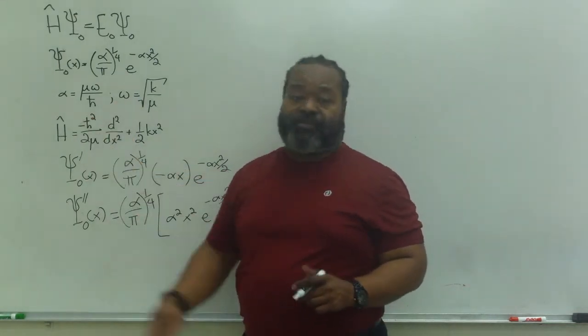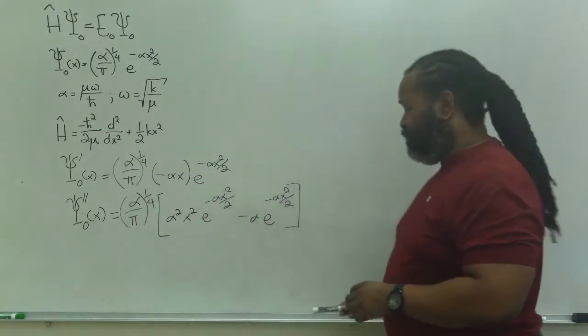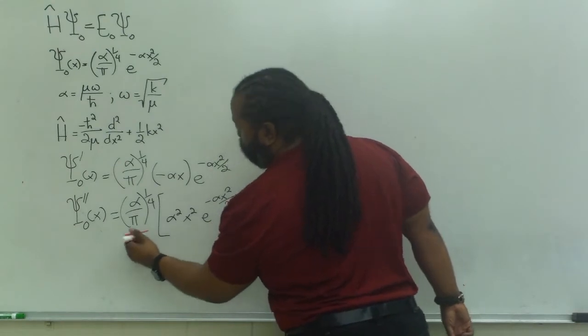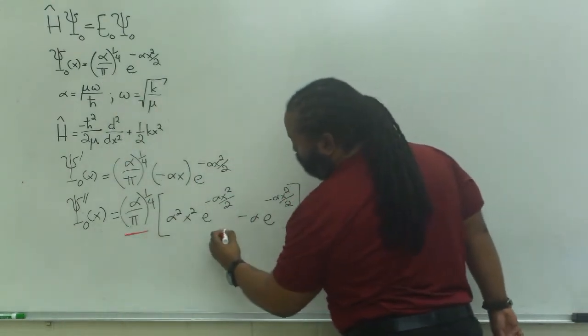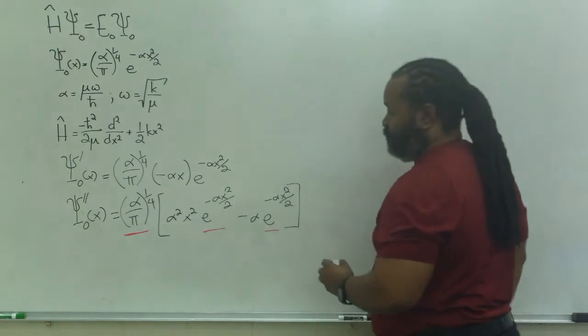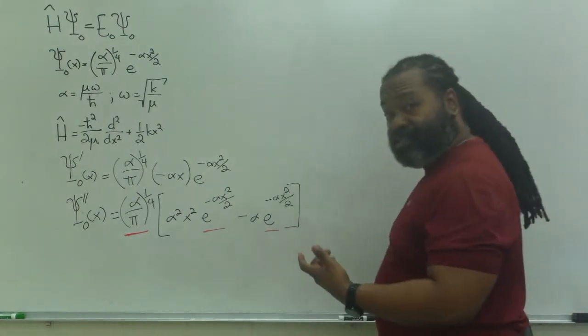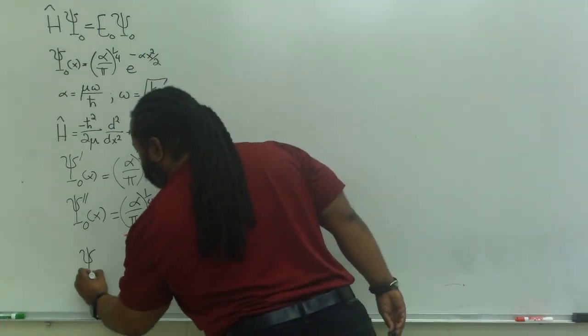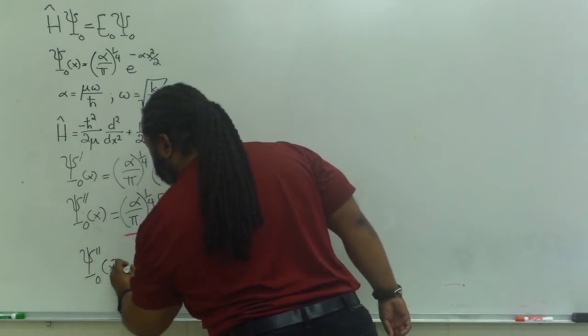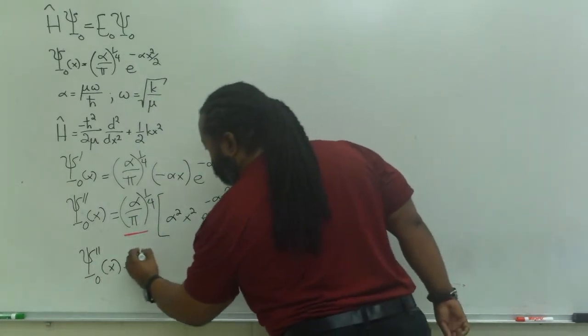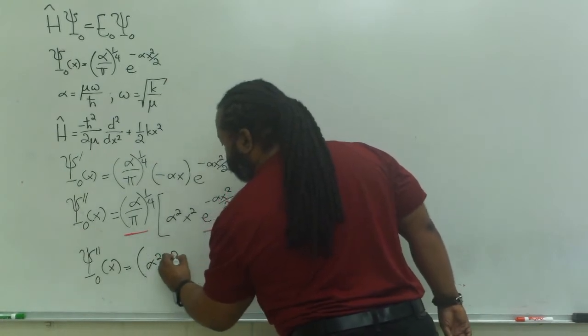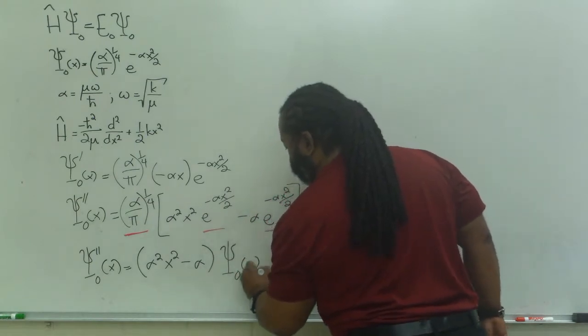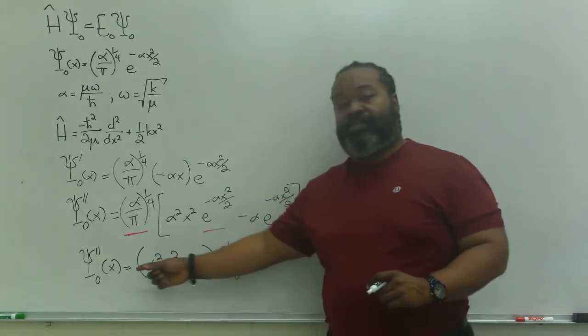But, the thing we want to make special care to recognize is that we have the normalization factor from the original wave function, and we can factor out the exponential. So, I could rewrite this second derivative in a way that's a bit more convenient, because I can say that the second derivative is going to be all of these alphas and x's. So, alpha squared x squared minus alpha times the original wave function. So, I've got a polynomial times the wave function.